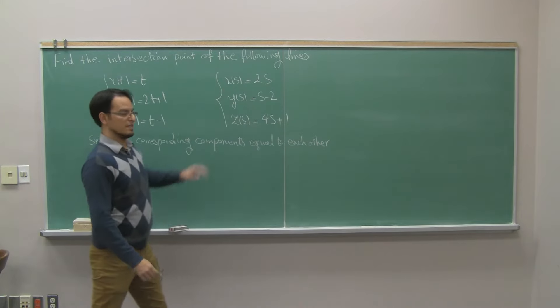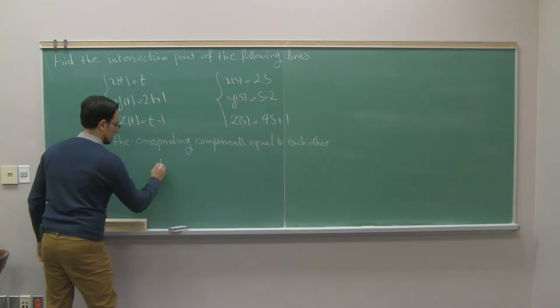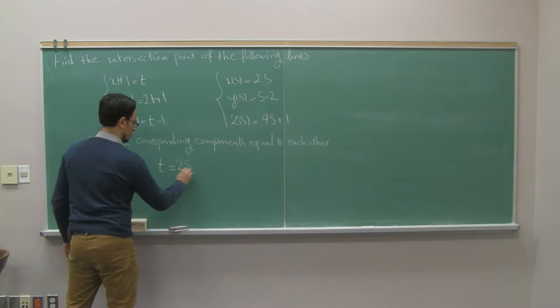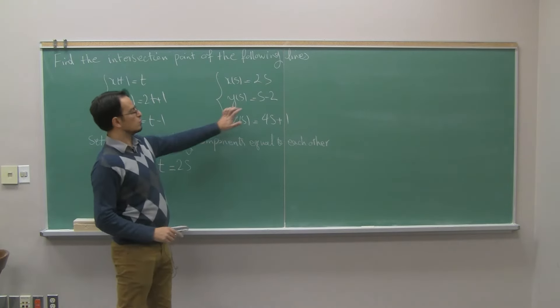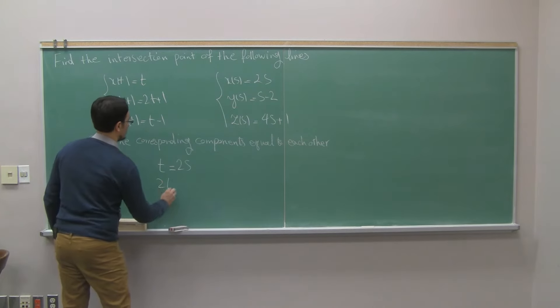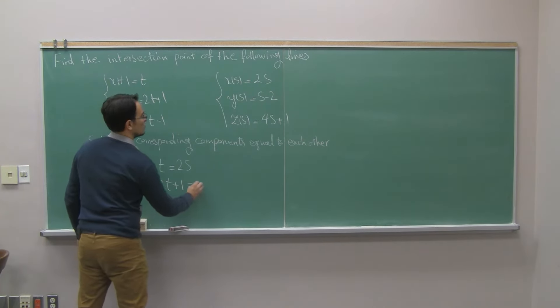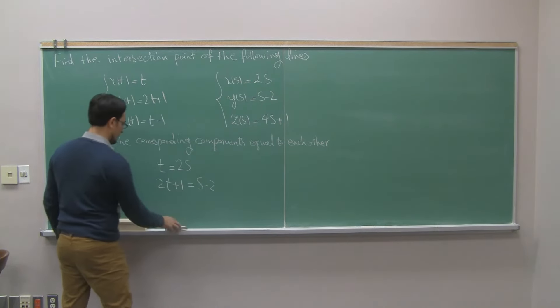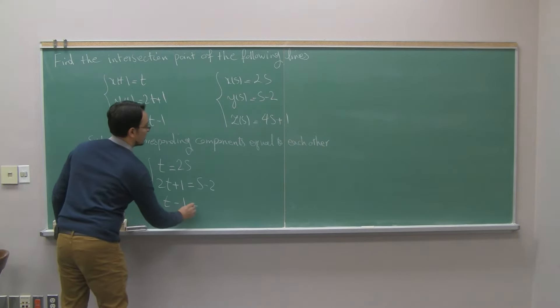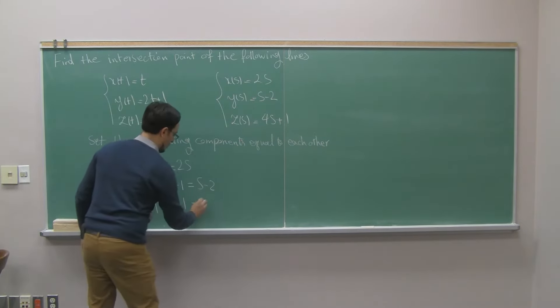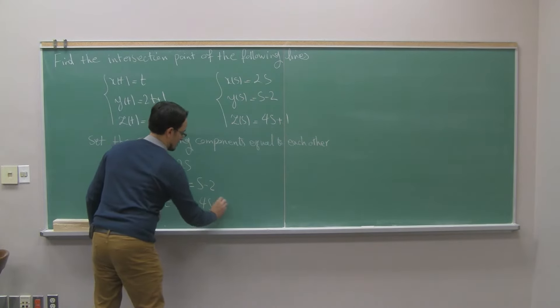So, x_t equals to x_s. So I will get t equals to 2s. The second one, y_t equals to y_s. So I have 2t plus 1 equals to s minus 2. And the third one is t minus 1 equals to 4s plus 1.